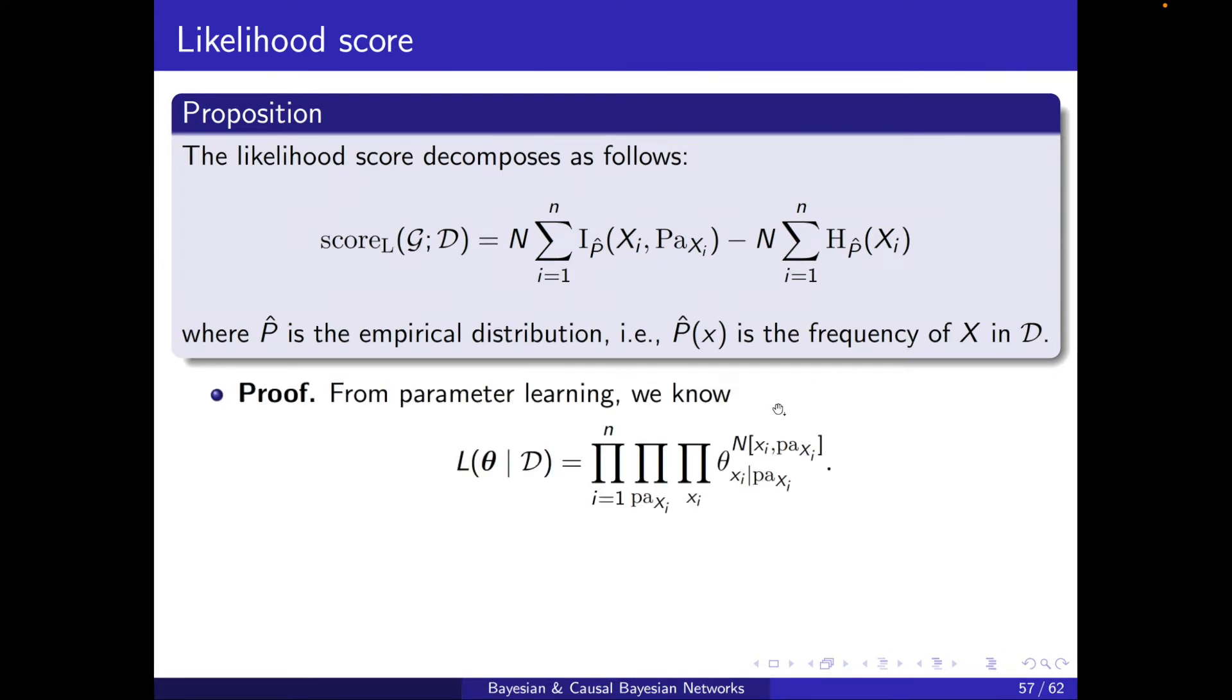And here's the proof. From parameter learning, we know that the likelihood of a parameter theta is this multiplication. You see that the number of times that Xi and parents of Xi appears here shows up as the power of theta. And from here, if I take the log, then all of these multiplications will turn into a summation. So you can see why log is often used as the score function here and in the next sections.